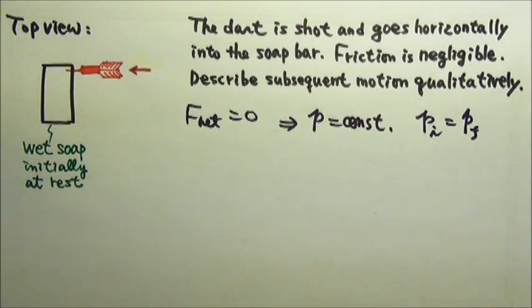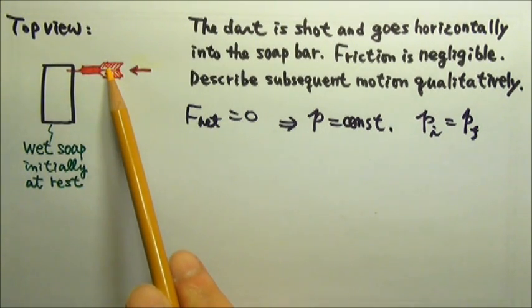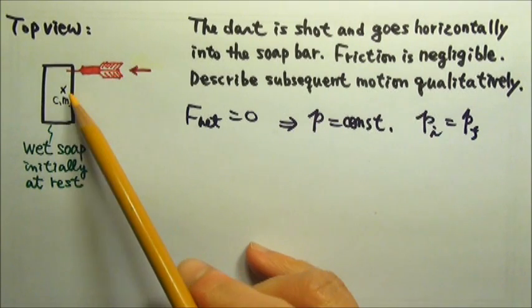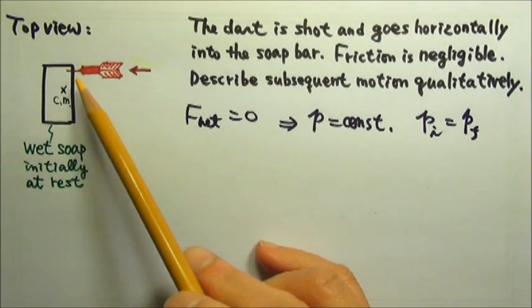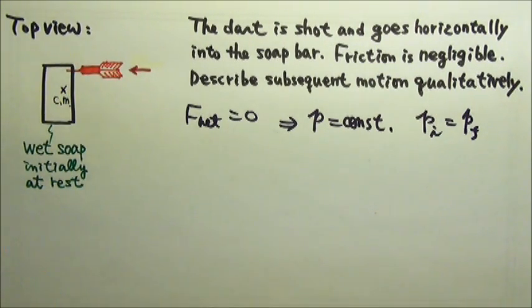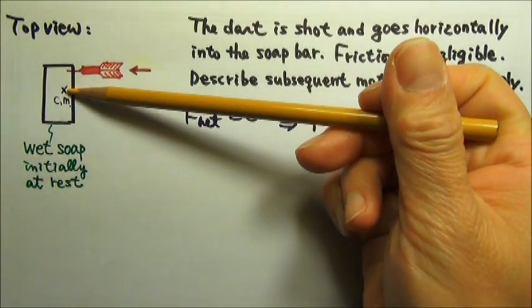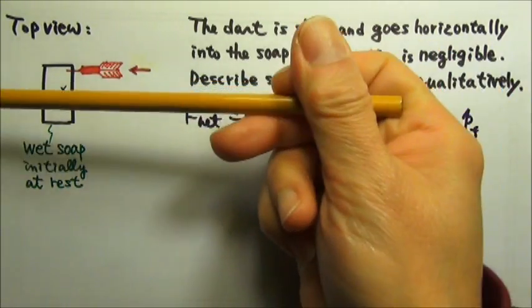By combination I mean the system's center of mass. Suppose the center of mass of the dart bar of soap system is right here. That means after the collision, the center of mass would travel to the left.